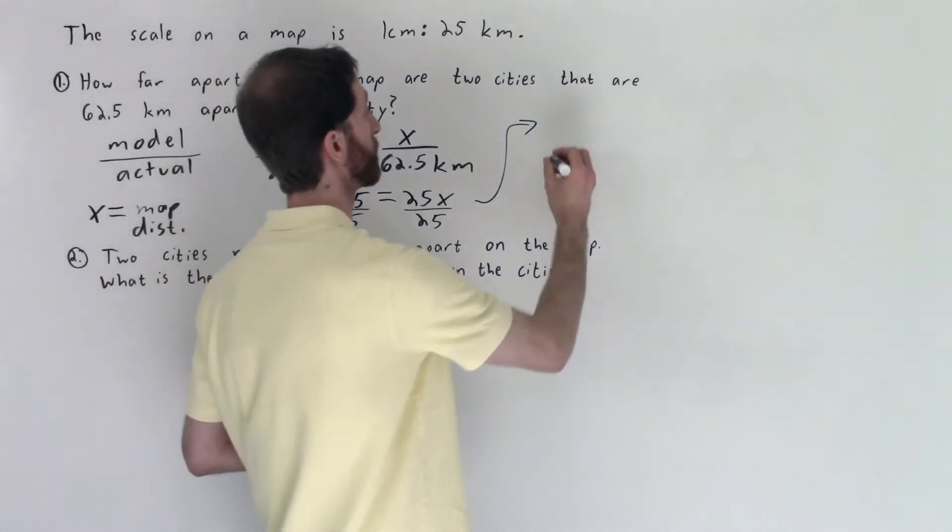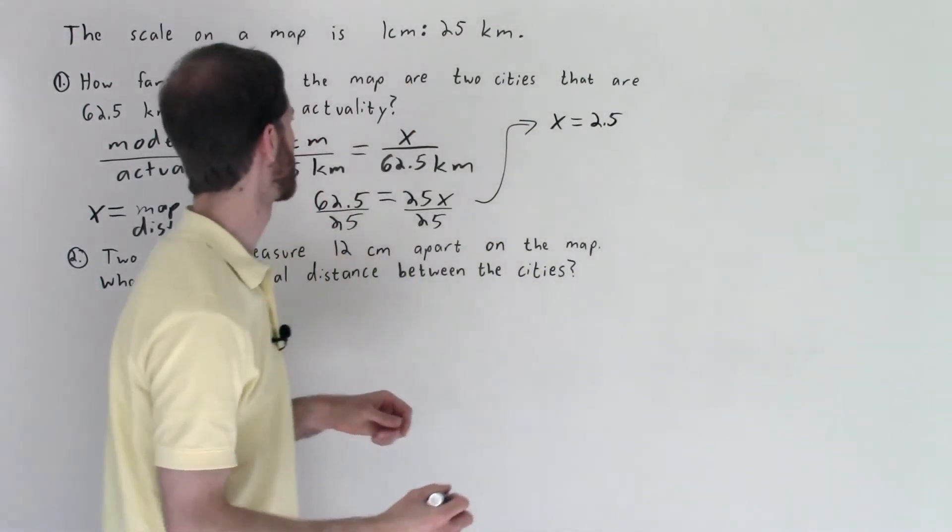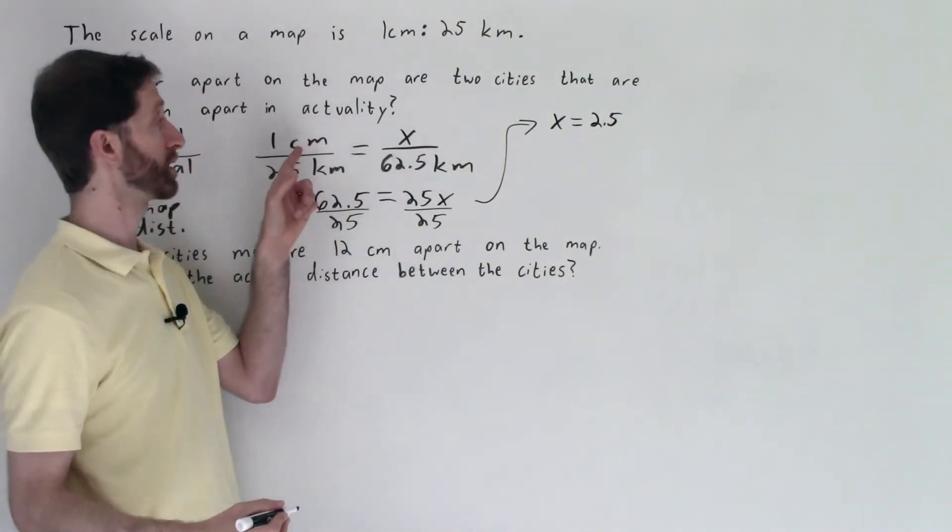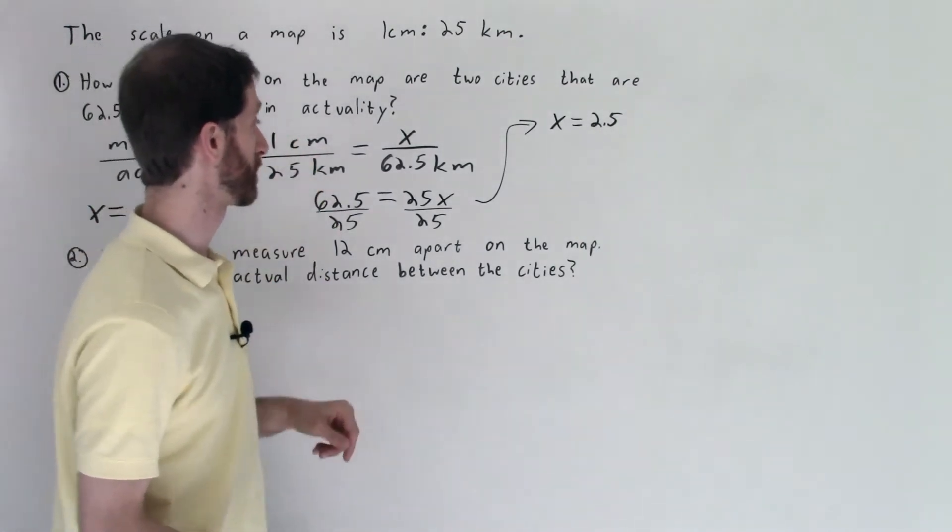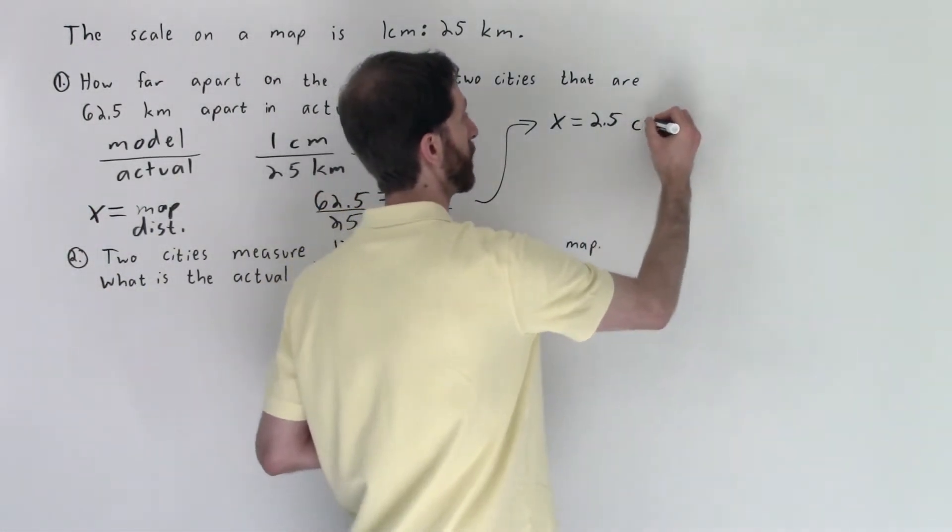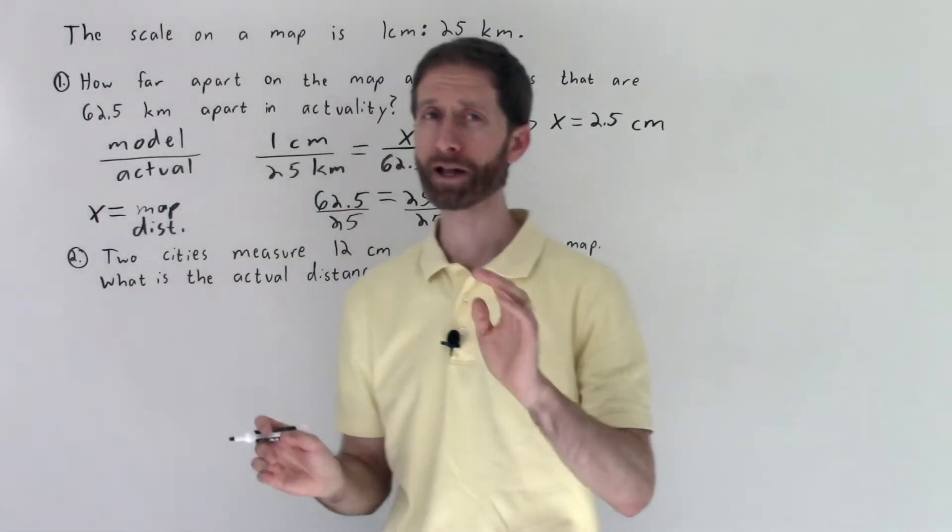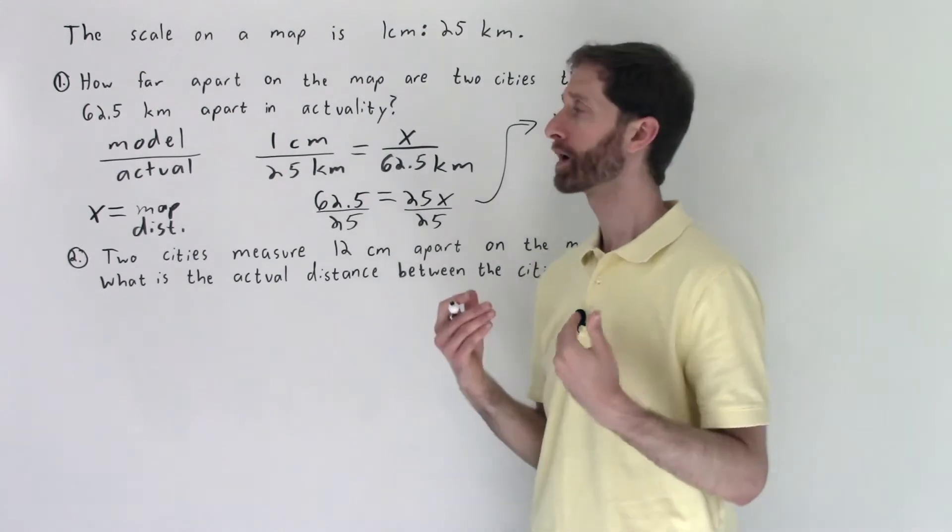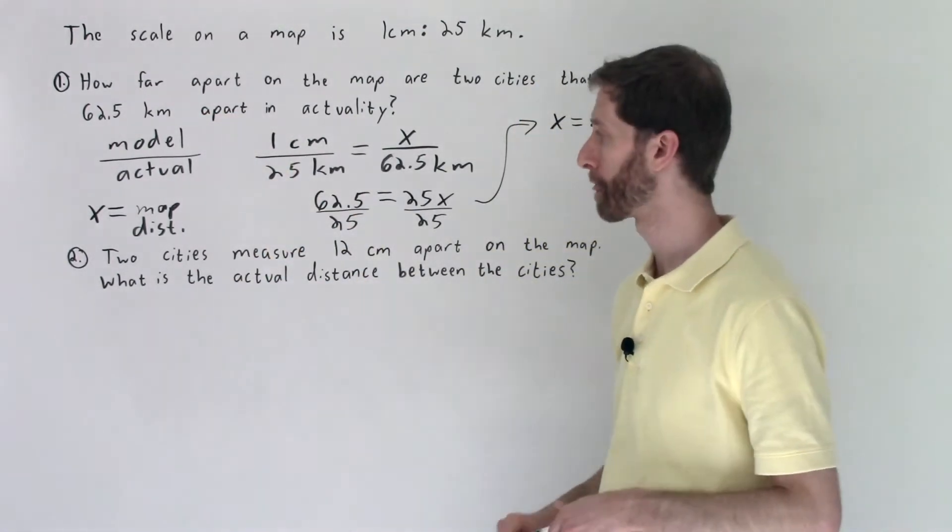What we're left with here is a very simple calculator problem. 62.5 divided by 25 ends up being 2.5, so x is equal to 2.5. And 2.5 what? Well if you look at this proportion we see that it'd be 2.5 centimeters because we're doing centimeters to kilometers here. So 2.5 centimeters, and that's the distance on the map.